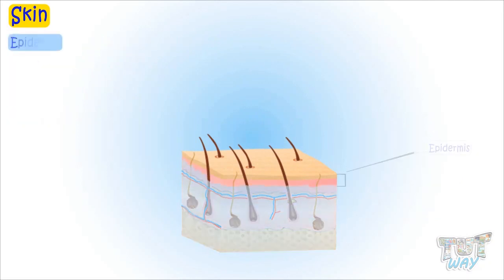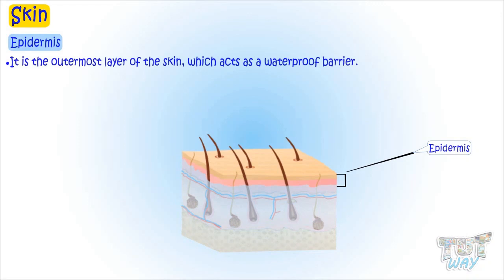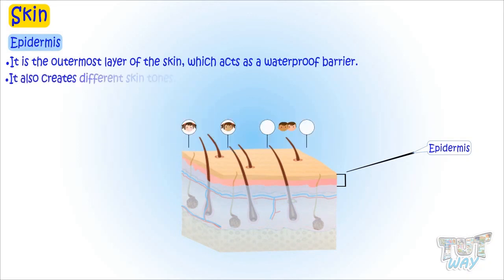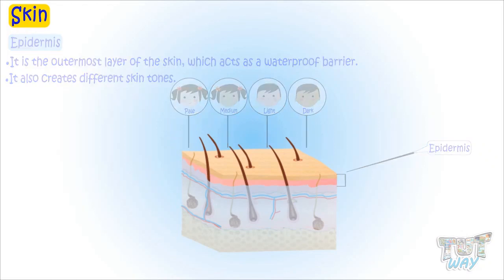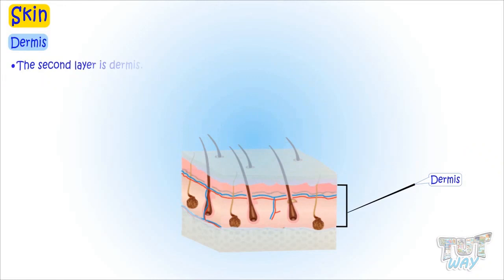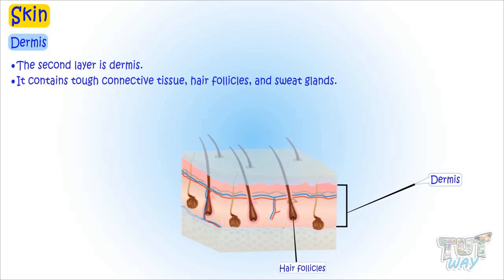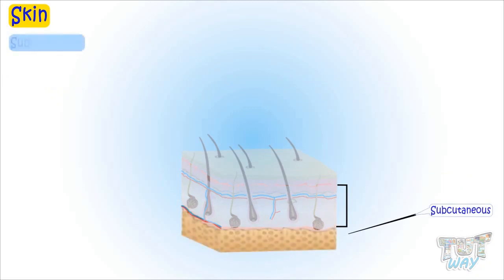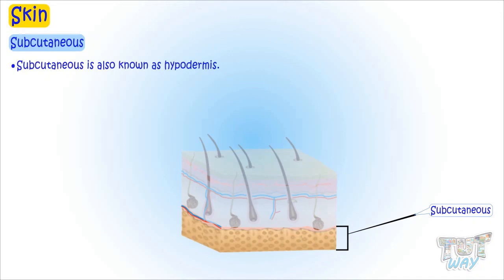The epidermis is the topmost or outermost layer of the skin. It acts as our waterproof barrier and also creates different skin tones. The second layer is the dermis. It contains tough connective tissue, hair follicles, and sweat glands. The deeper layer is subcutaneous, also known as hypodermis. It is mainly made up of fat and connective tissue.